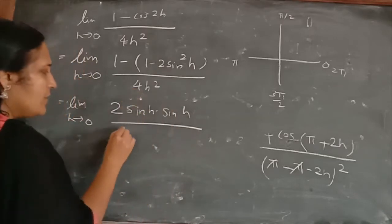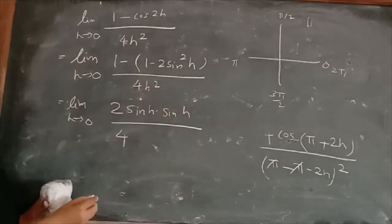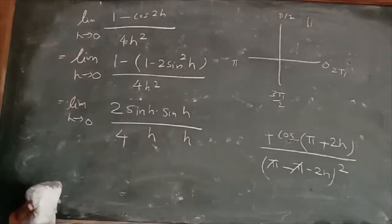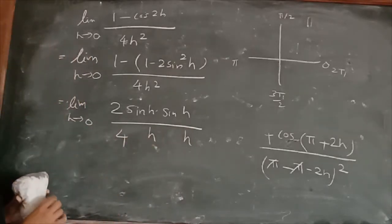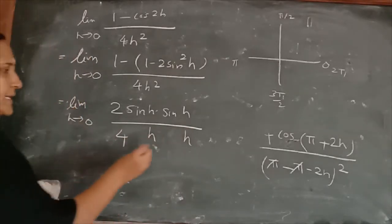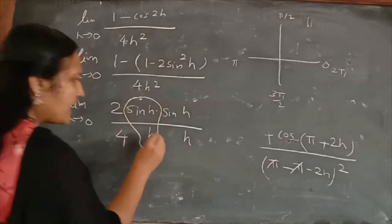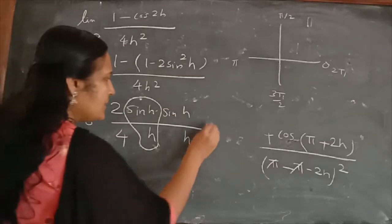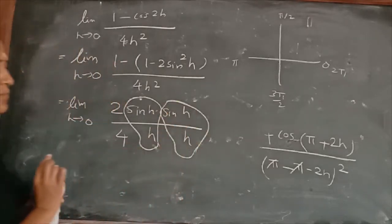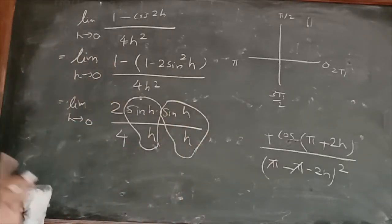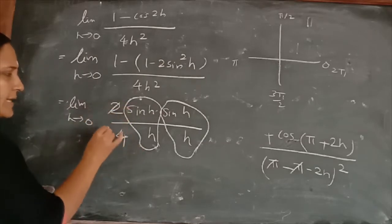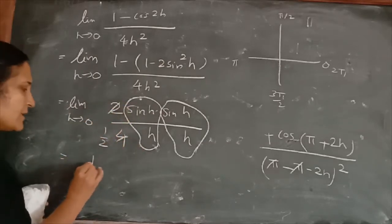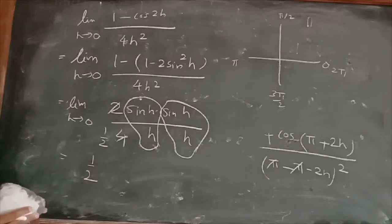We write 2sin²h = 2·sin(h)·sin(h) and 4h² = 4·h·h. Rearranging: limit h tends to 0 of (sin h / h) · (sin h / h) · (2/4). Since limit h→0 of sin(h)/h = 1, both factors equal 1. So 2/4 = 1/2. The answer is 1/2.